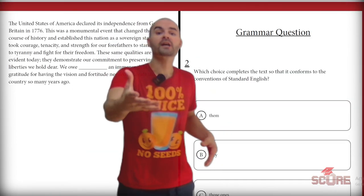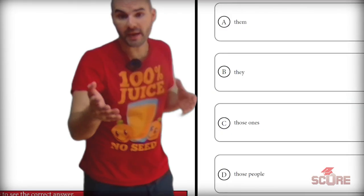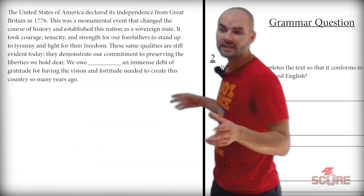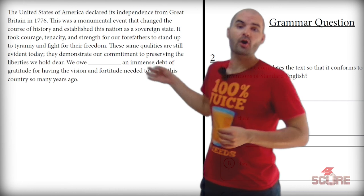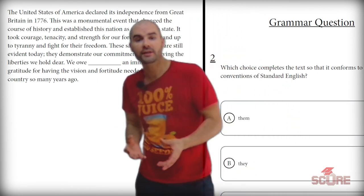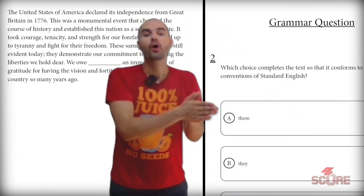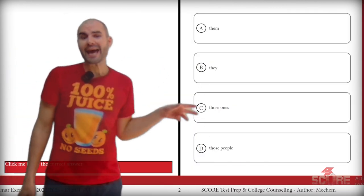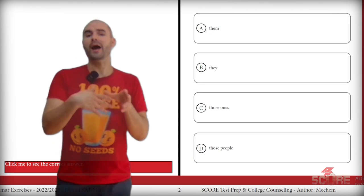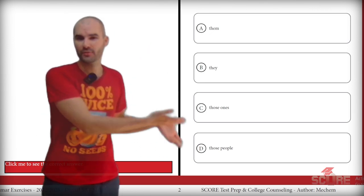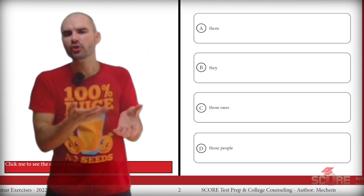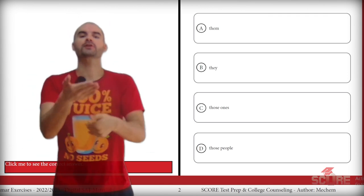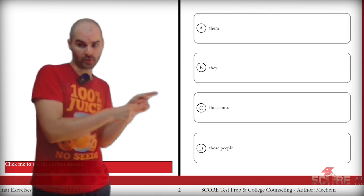Our second grammar question introduces the concept of pronouns. Looking at my answer choices, I see: them, they, those ones, those people. The blank says 'we owe blank an immense debt of gratitude,' which means I need either 'them' or 'those people' — we wouldn't use 'those ones' or 'they' after a verb. So I'm between 'them' or 'those people,' and the question is: do I need to say 'people' here? When I use 'them,' I'm referring to the previous plural noun, so I need to read backwards.